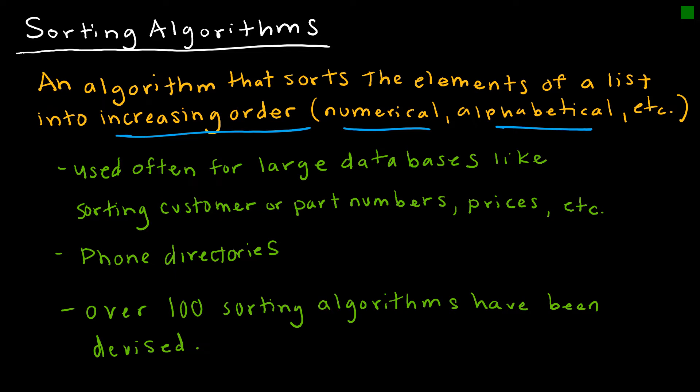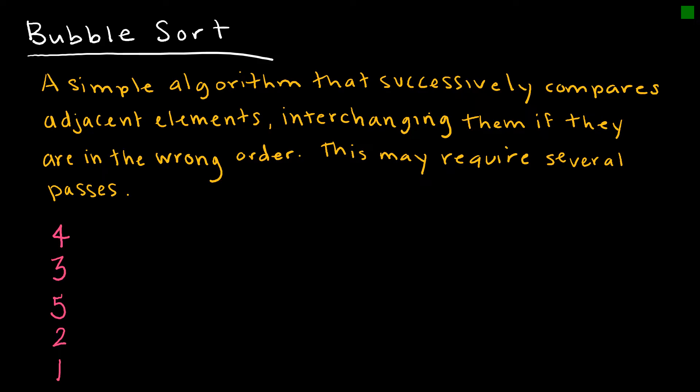There are over 100 sorting algorithms that exist out there in the world — we're not going to look at all 100 of them, you're welcome. The first one we're going to look at is the bubble sort algorithm, which basically compares adjacent elements, interchanging them if they're in the wrong order. It may require several passes.